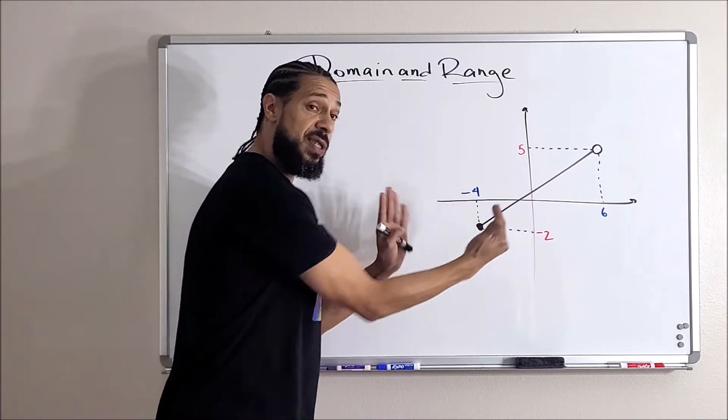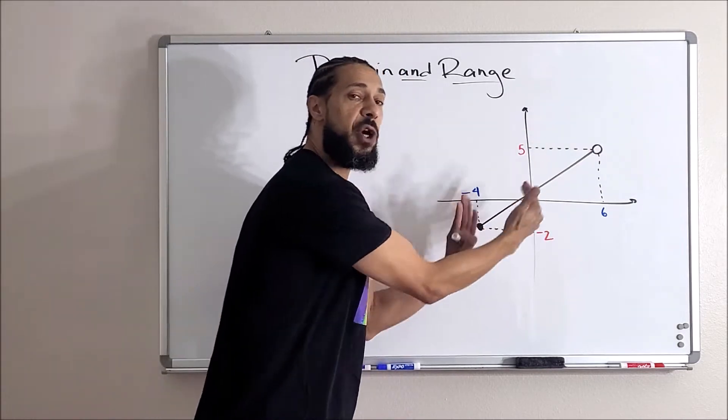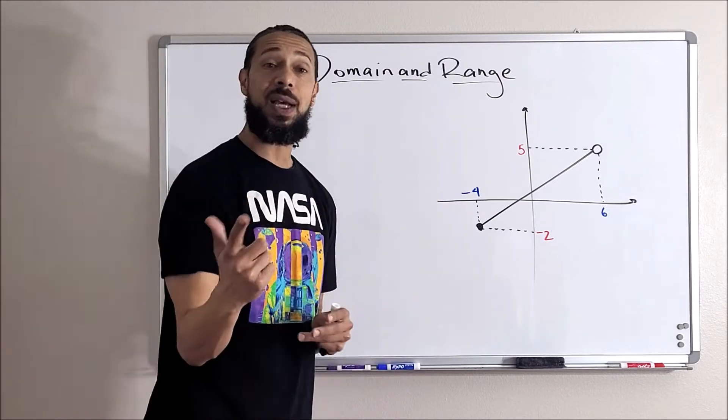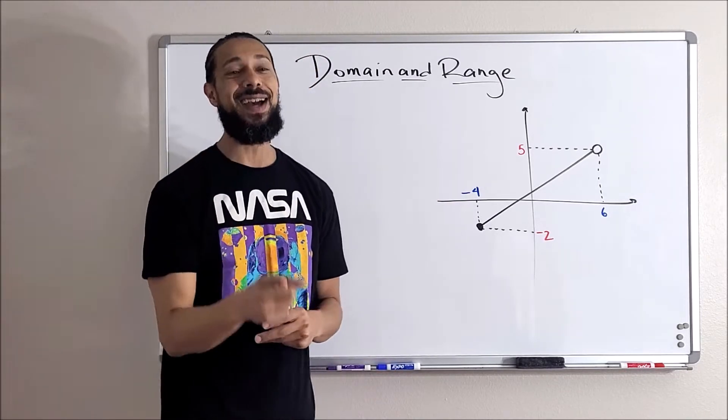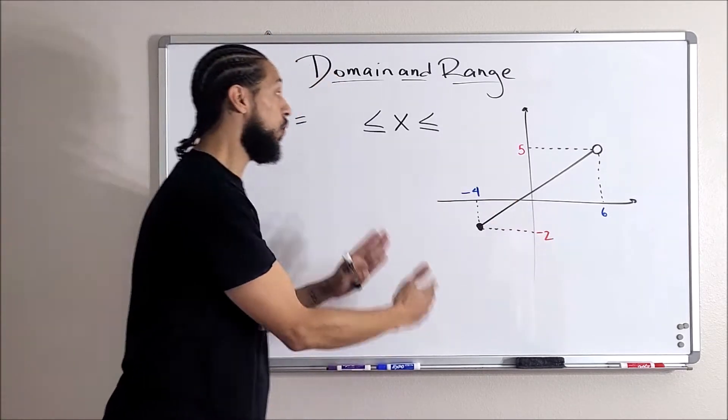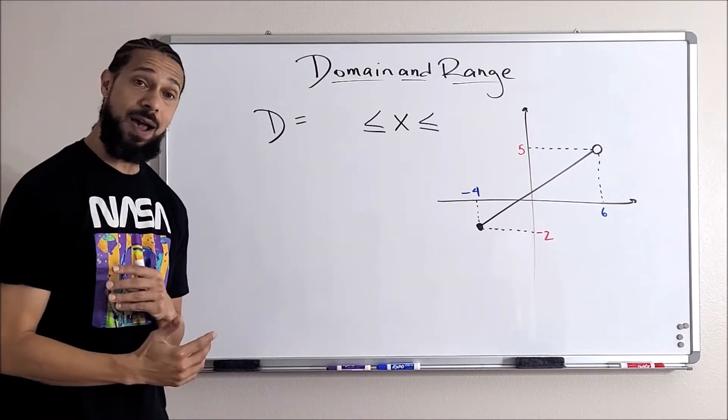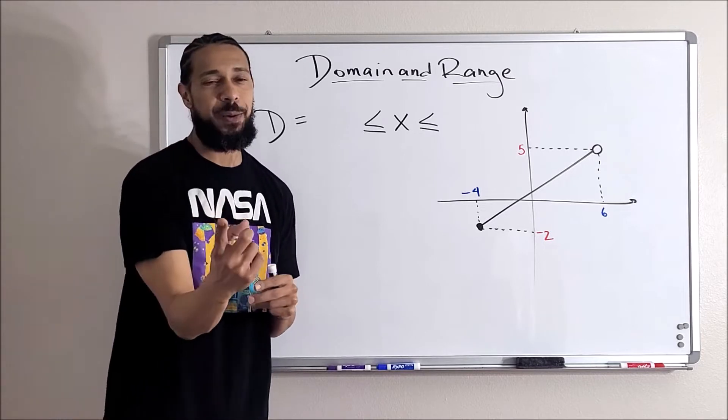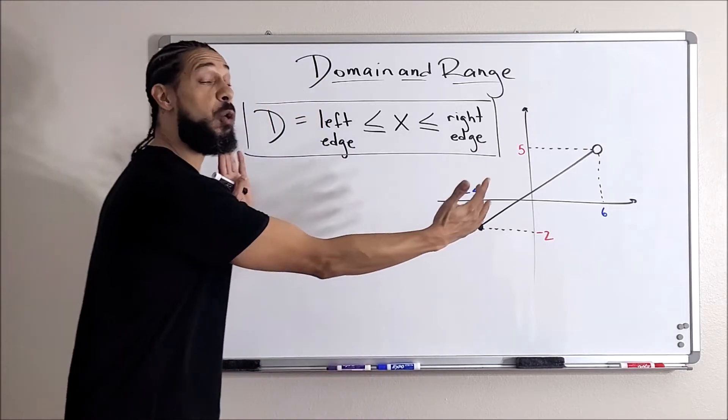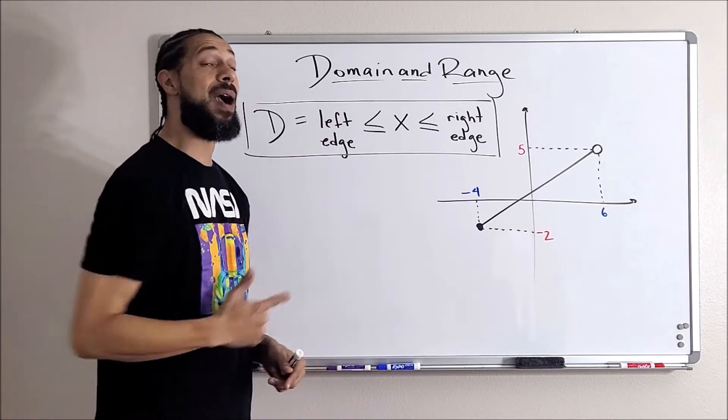So it would be easier for us to just write a range of x values that we see here. Notice this line doesn't go on forever, this line only covers certain x values. To write the domain for a situation like this, it's going to look something like a compound inequality. Our domain, or our collection of x values, is in between two of these x values on this graph, and those two x values are always going to be the left edge of the graph and the right edge of the graph. Go ahead and write that down and put a box around it - that means it's important.